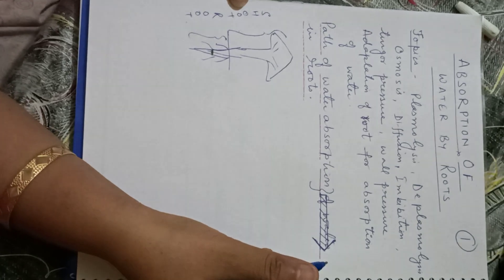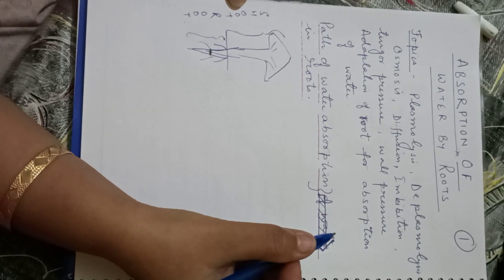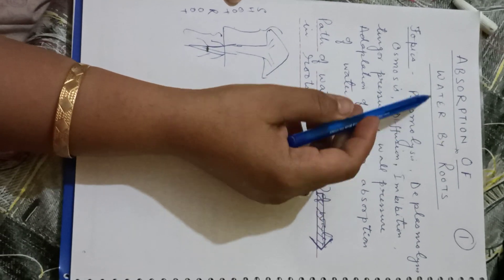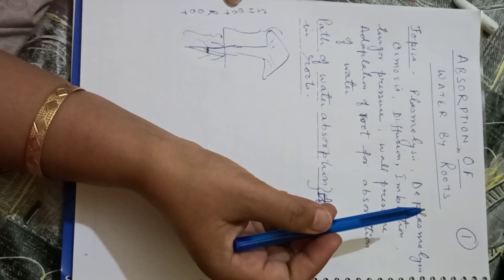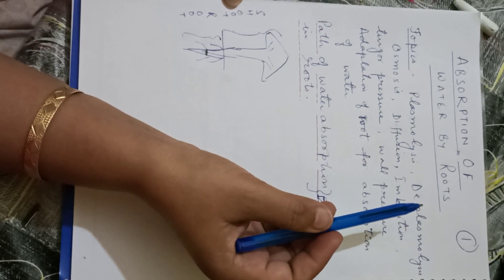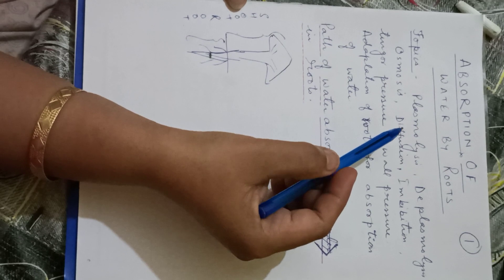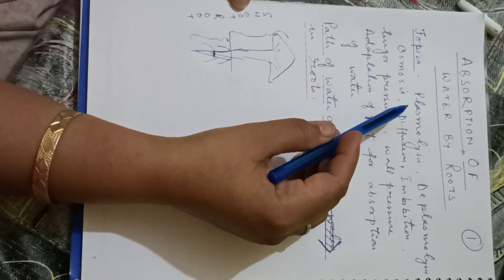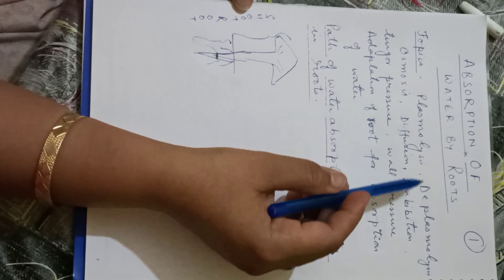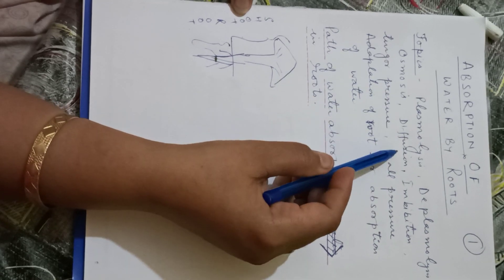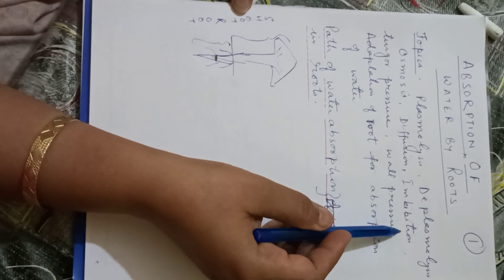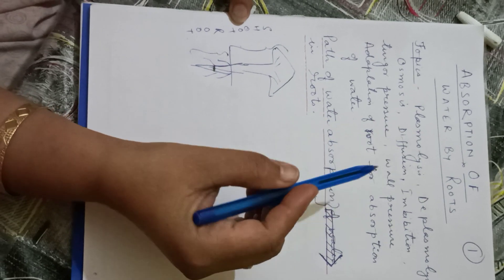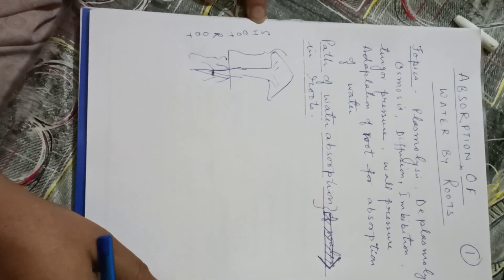Hello everyone. This is the third video on absorption of water by roots. Before this one, we have covered these many topics in the rest of the two videos: plasmolysis, deplasmolysis, osmosis, diffusion, imbibition, turgor pressure, wall pressure, and adaptation of roots for absorption of water.